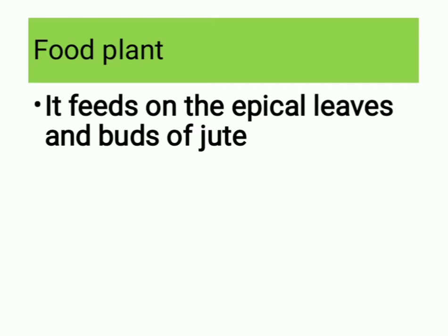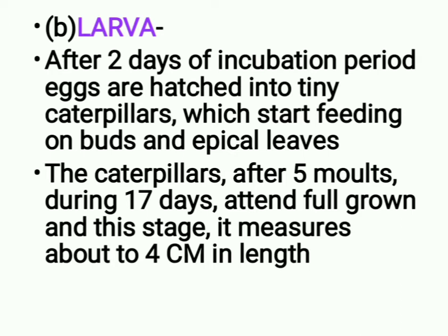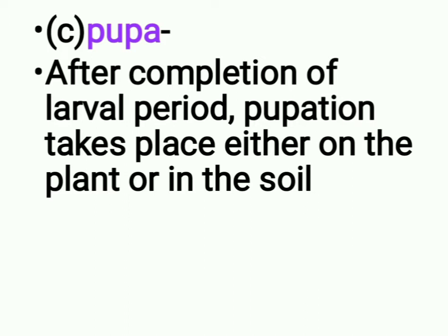Food plants: it feeds on the apical leaves and buds of jute. Life history — egg: the female moth lays eggs on the underside of young leaves. One female can lay about 150 eggs, and all eggs are laid singly. Larva: after two days of incubation period, eggs are hatched into tiny caterpillars which start feeding on buds and apical leaves. The caterpillars, after five moults during 17 days, attain full growth and at this stage measure about four centimeters in length.